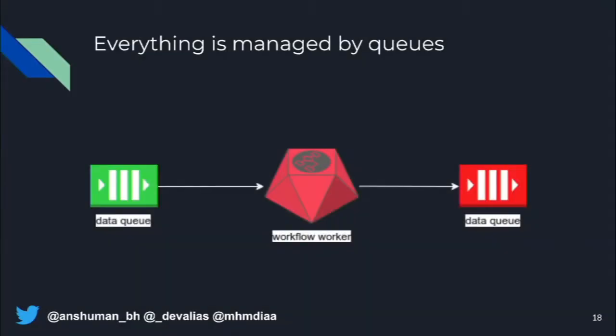The queue passes the value on to a different worker — this is where we run all the tools and do all the scanning. We call it the workflow worker. After the workflows finish, they drop the results into a different queue. It's all based on queues, all horizontally and vertically scalable.